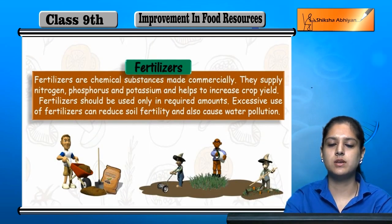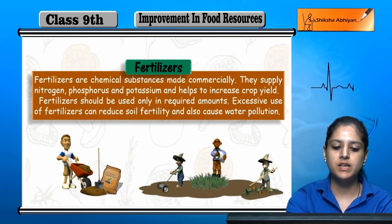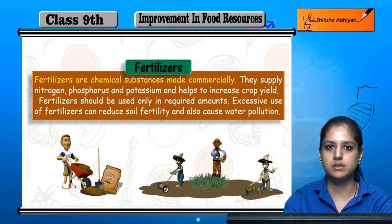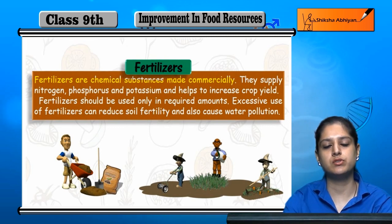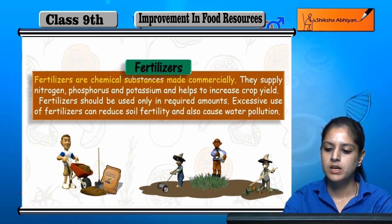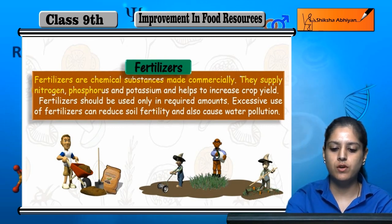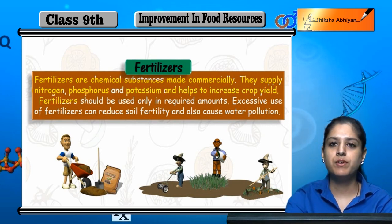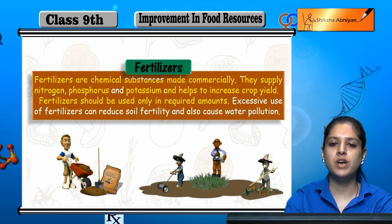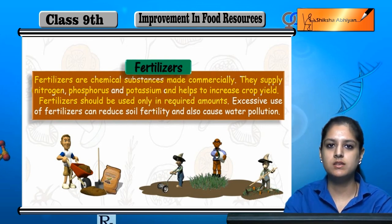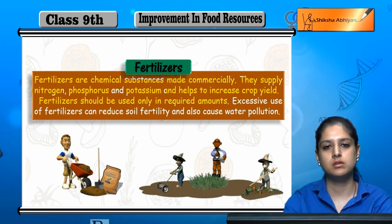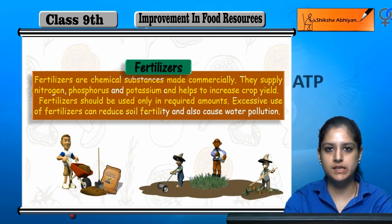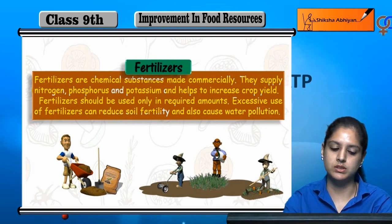Next is fertilizer. Fertilizers are chemical substances made commercially in industries; we cannot prepare them at home. They supply nitrogen, phosphorus, potassium, and improve crop yields. However, excessive use of fertilizers makes the soil poor and also causes water pollution.